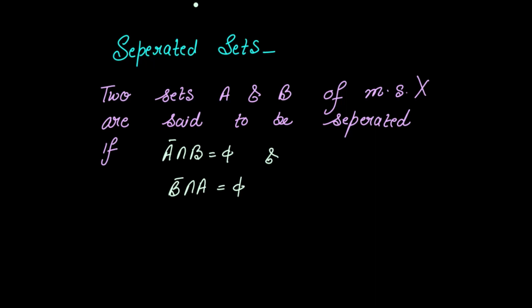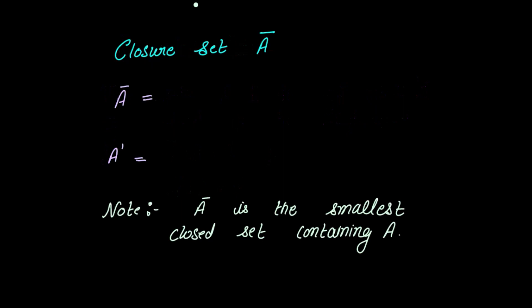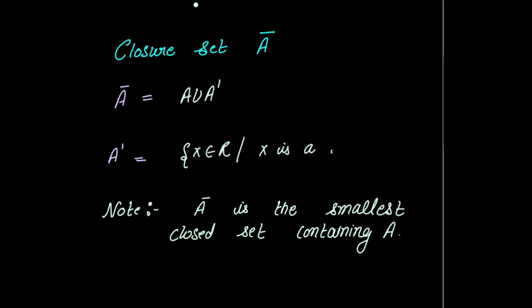Now, let's recall what A-closure means. A-bar is the set A union with A-dash, where A-dash is the derived set — that is, the set of all x belonging to ℝ such that x is a limit point of A. So A-dash is the collection of all limit points of A, and A-closure is A itself union with A-dash. In fact, A-bar is the smallest closed set containing A.